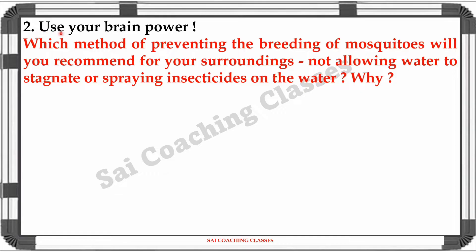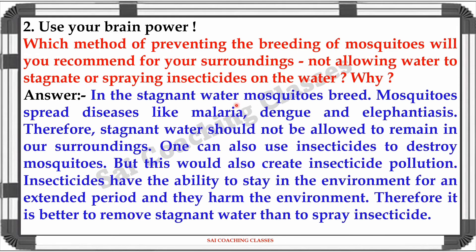Question 2: Which method of preventing the breeding of mosquitoes will you use — removing stagnant water or spraying insecticides? Why? In stagnant water, mosquitoes breed and spread diseases like malaria, dengue, and elephantiasis. Therefore, stagnant water should not be allowed to remain in our surroundings. One can also use insecticides to destroy mosquitoes, but this creates insecticide pollution. Insecticides stay in the environment for an extended period and harm it. Therefore, it is better to remove stagnant water than to spray insecticides.